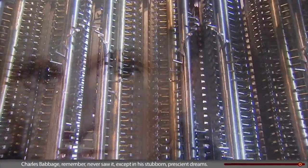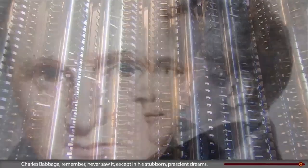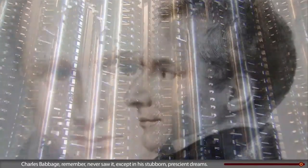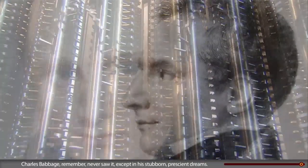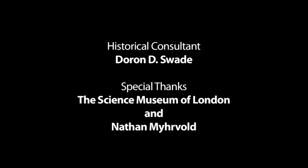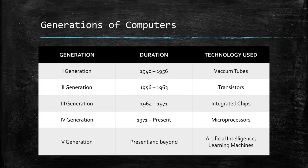Charles Babbage never saw it, except in his stubborn, prescient dreams. Let's now dwell briefly upon the generations of computers. Modern-day computers can be classified into five generations, with the first generation beginning in the year 1940 up to 1956.